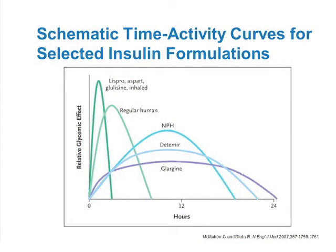The insulins currently available include the short-acting analogs — lispro, aspart, glulisine, and inhaled insulin — with very rapid peaks. If you correlate with beta cell function, the short-acting analogs almost mimic the first phase of insulin secretion, or a combination of first and second phase. Regular insulin is pure second phase — there is no first phase effect. That's why you get higher postprandials with regular insulin than with lispro or any of the short-acting analogs.